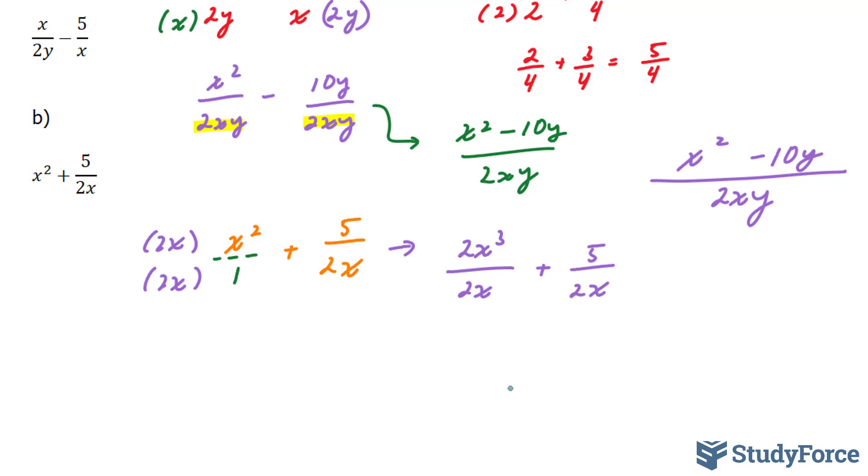Plus 5 over 2x. These denominators are the same, so I can write it once, over the sum of these two terms. They're not like terms, so just leave them the way they are.